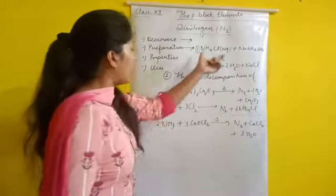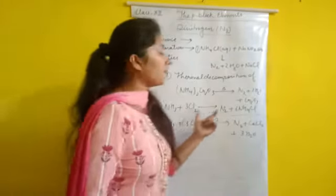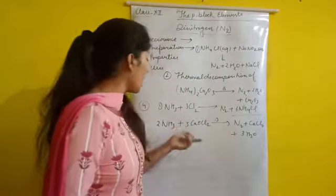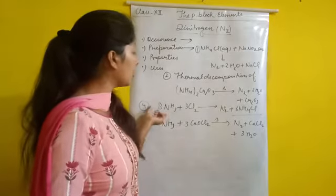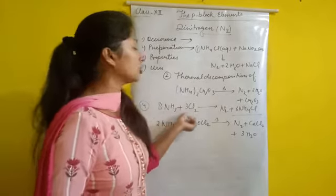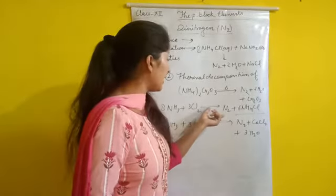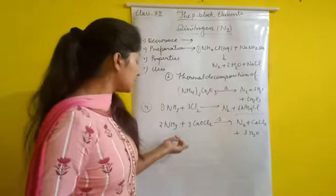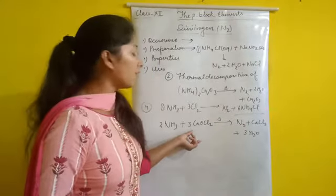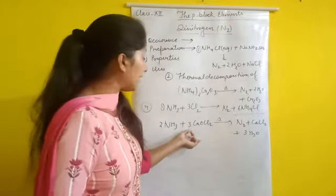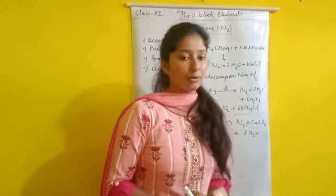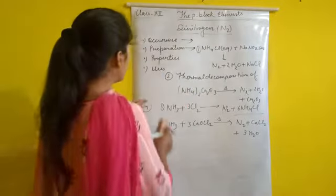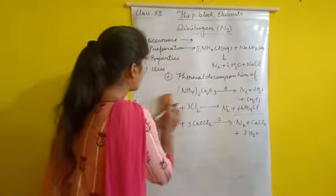When excess ammonia is treated with chlorine gas, dinitrogen is produced. Also, when liquid ammonia is heated with CaCl2, it converts into N2, CaCl2, and 3H2O, forming dinitrogen. These are all the methods of preparation of dinitrogen.